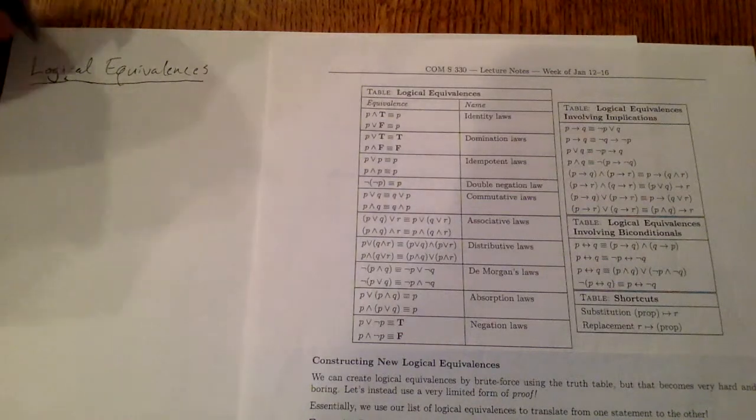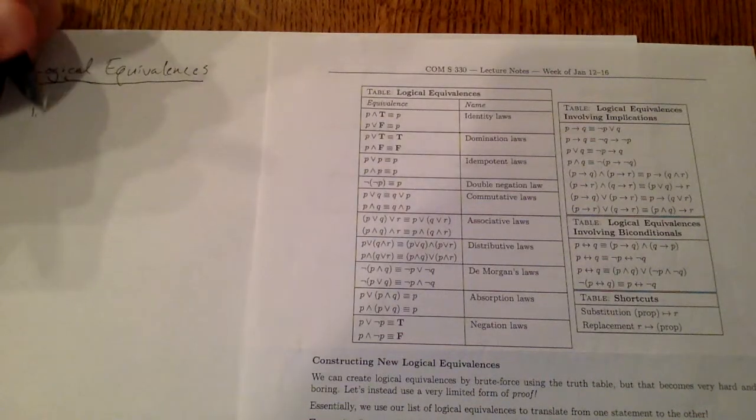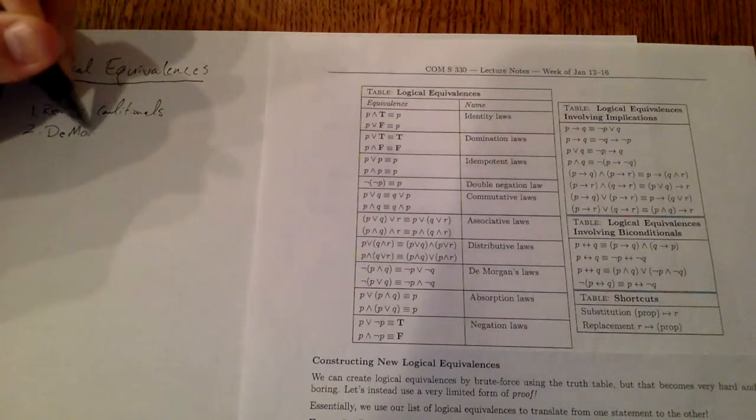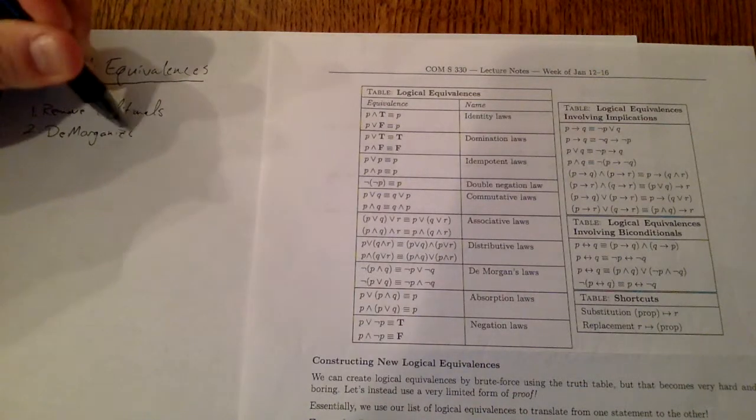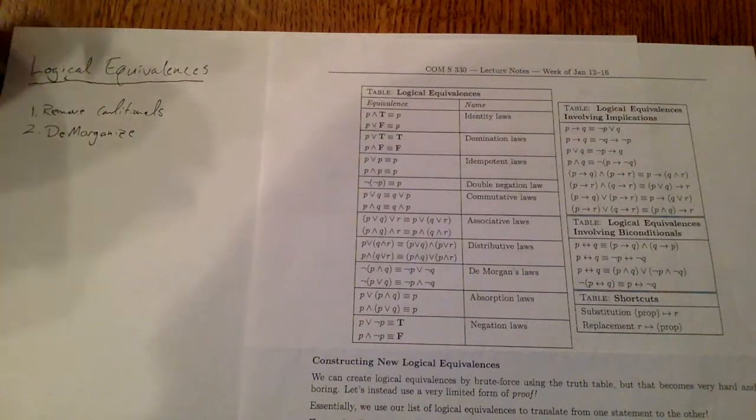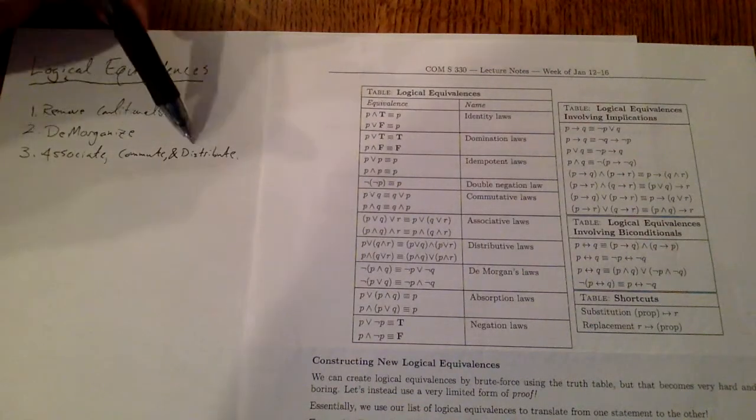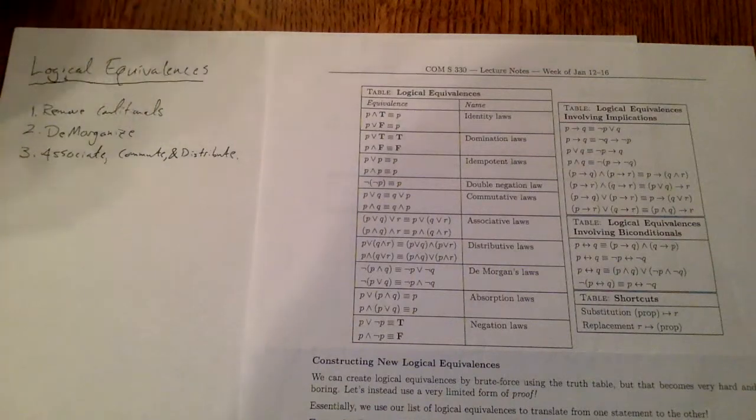That leads me to our first step when doing logical equivalences: remove conditionals. Second, we can use DeMorgan's laws to move all of the negations towards the inner parts. And third, we'll use our associative, commutative, and distributive laws to help get all of our like terms together.